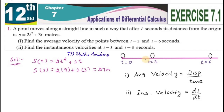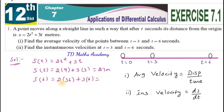Now you have to find s(6). s of t means the distance at time t. So s of 6 equals 2 into 6 squared plus 3 into 6. That is 2 into 36 plus 18, which is 72 plus 18 equals 90 meters. So at six seconds the point is 90 meters from the origin.